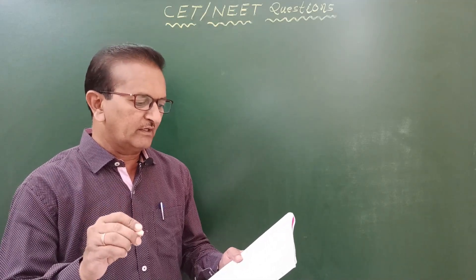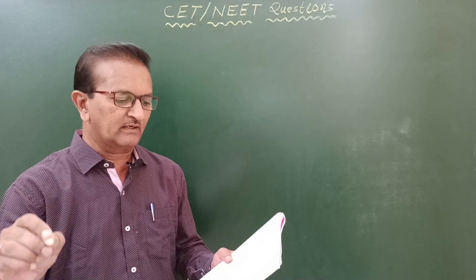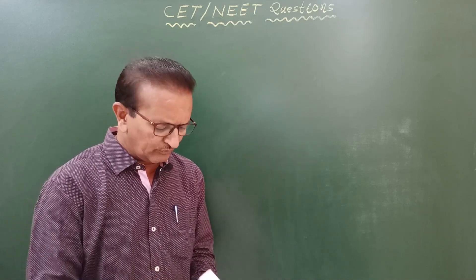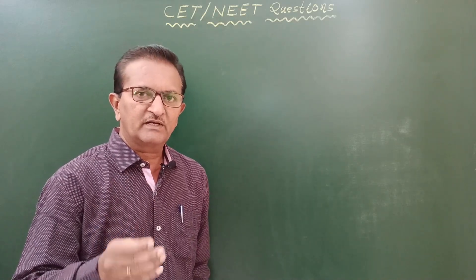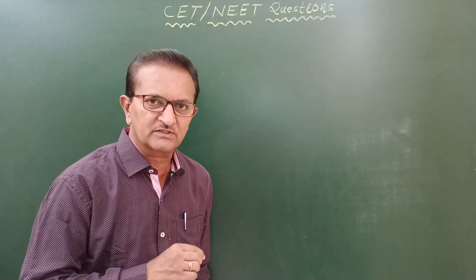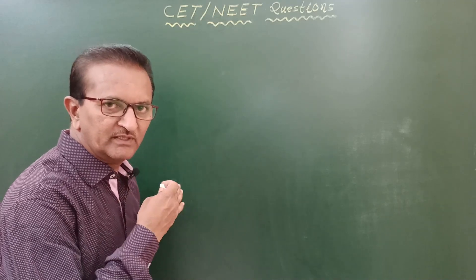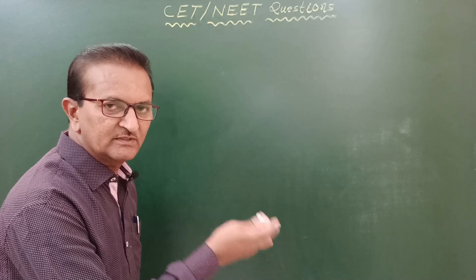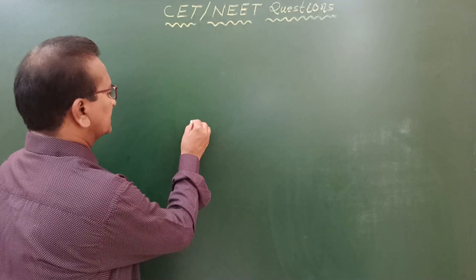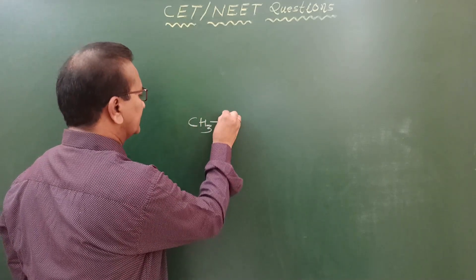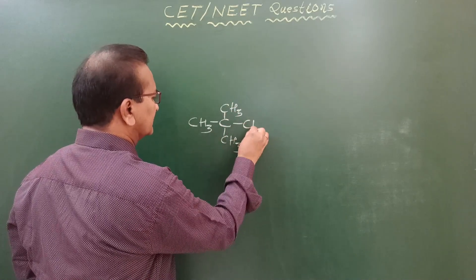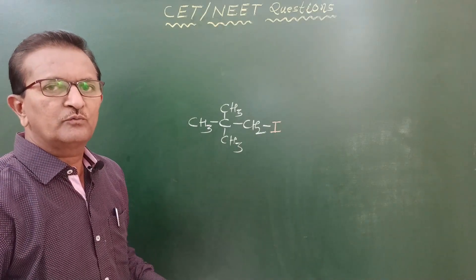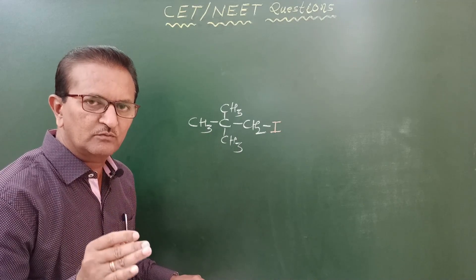Question 1: Neo amyl iodide is an example of what type of monohaloalkane? Amyl is also called as pentyl; 'pent' represents five carbon atoms. To derive the structure, out of five carbon atoms, three carbon atoms are present in the longest continuous chain, and two methyl groups are in branches on the last-but-one carbon atom. The structure is: (CH₃)₃C–CH₂–I. This is the formula for neo amyl iodide.